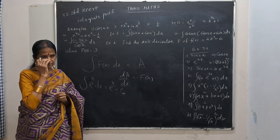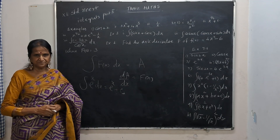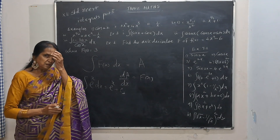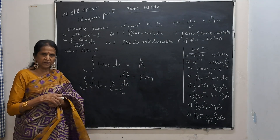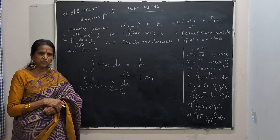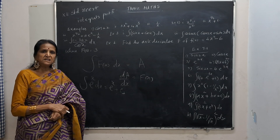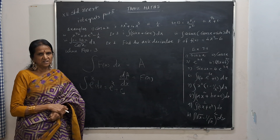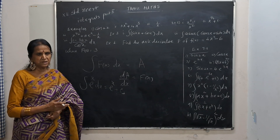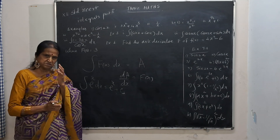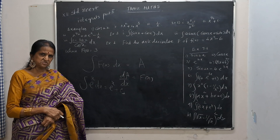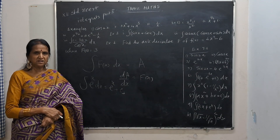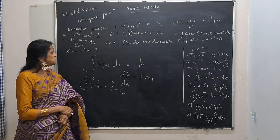Integration is not complete without a constant. The answer we get is not a definite answer, because c can be anything. This preliminary part we are doing — which we are going to do now — is called indefinite integration. The answer is indefinite. It can be e to the power x plus 1, or e to the power x plus 2, or e to the power x plus c, where c is the constant of integration.